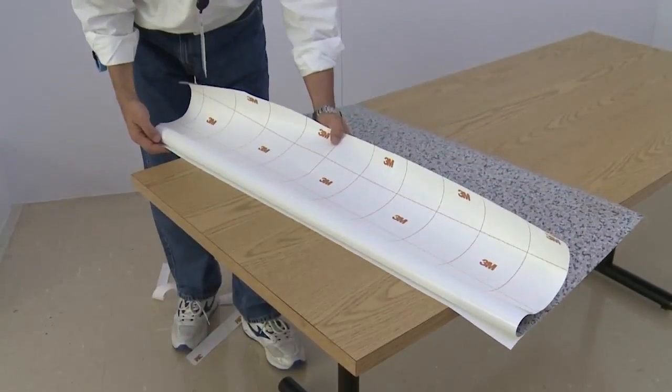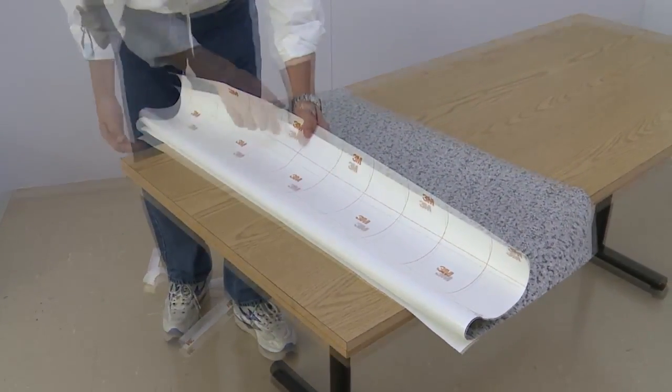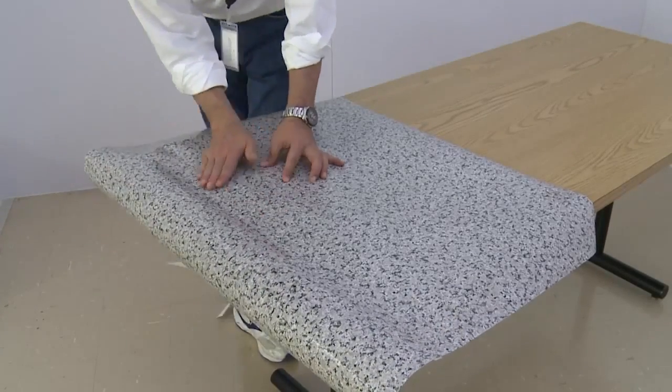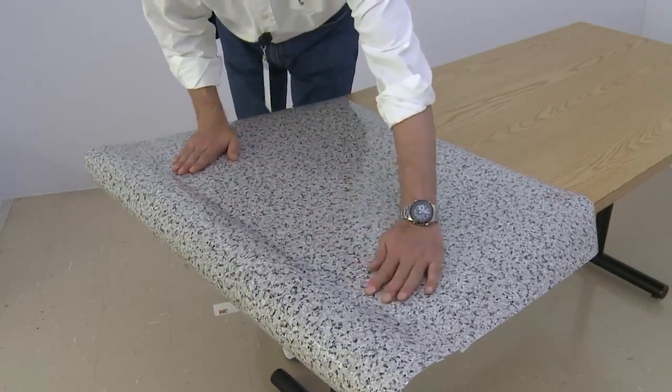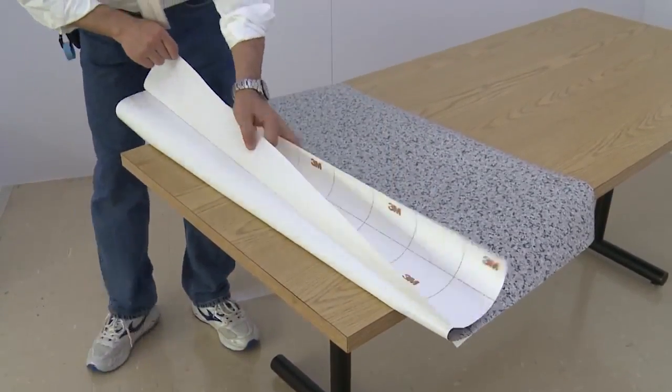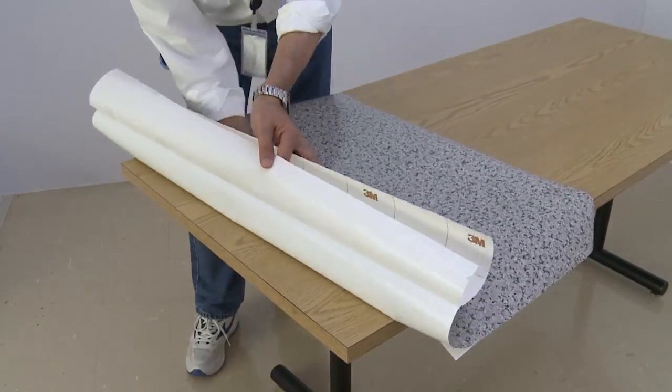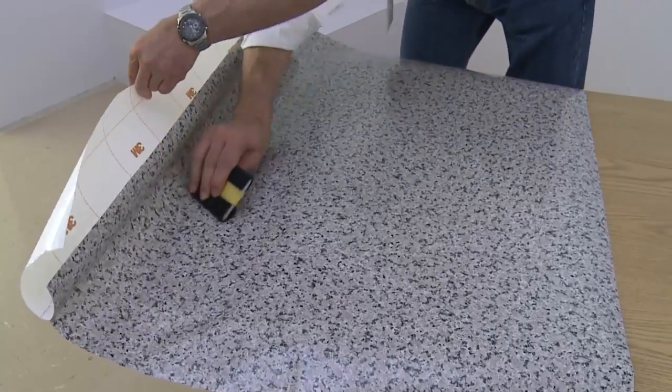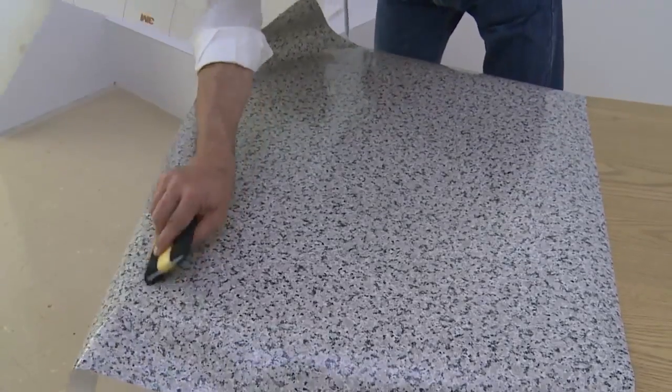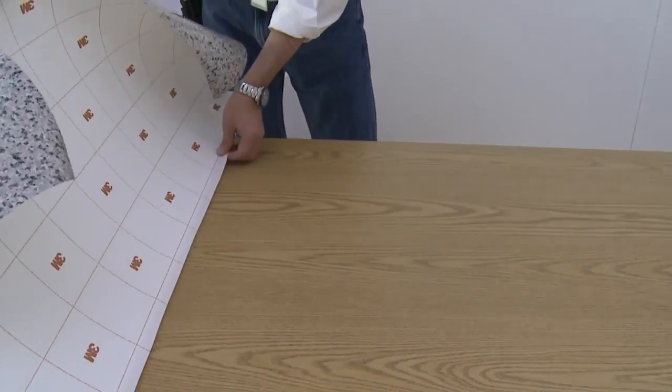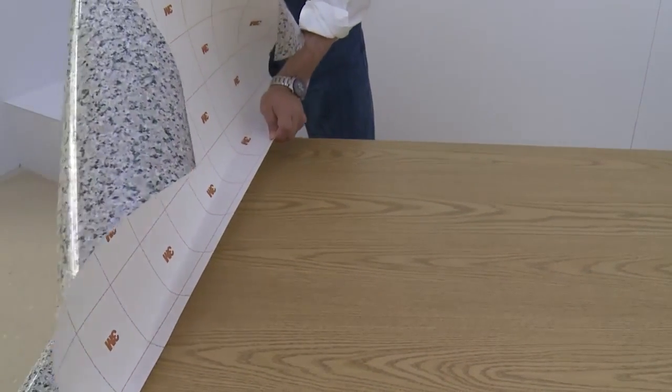Lay the film on the tabletop so the exposed adhesive is a few inches from the edge of the table. Lightly adhere the film to the tabletop using your hand. Remove a few inches of liner from the film. Use an edge protected squeegee to adhere the exposed adhesive to the tabletop. The proper squeegee technique is to work from center to edge, center to edge, always pushing the air to the nearest edge and using firm overlapping strokes.